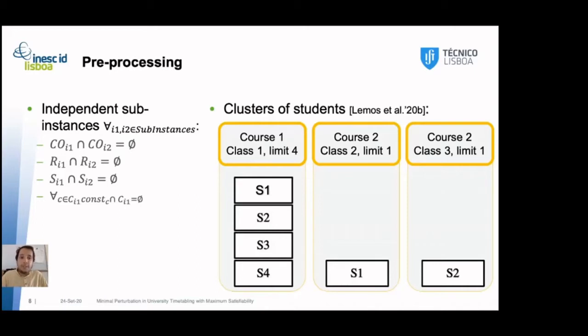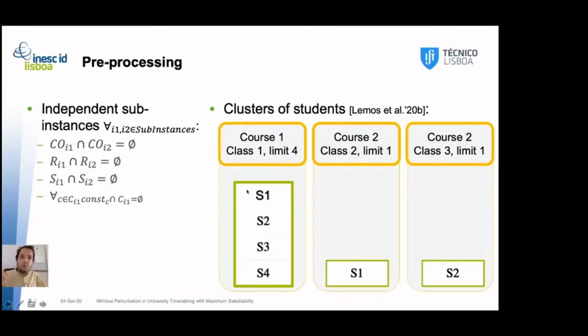So, the other pre-processing technique is to merge students. We want to create clusters of students as large as possible that have exactly the same curriculum plan. Here, we have an example where course one has only one class with a limit of four students. Course two has two classes, two and three. Both classes have a limit of one student. In this short example, we could consider these four students as independent. However, in larger instances, this wouldn't be practical. So, we could consider to merge all students into one big cluster.